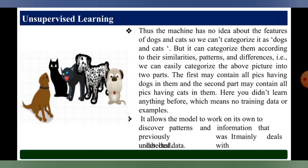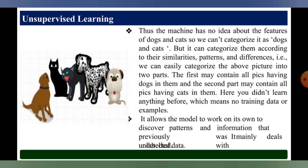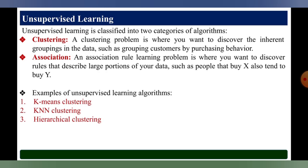In this process, you didn't learn anything before — there is no training data or examples. It allows the model to work on its own to discover patterns and information; it mainly deals with uncollected data sets. Unsupervised learning is classified into two categories of algorithms, which I will explain further in the coming slides.